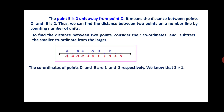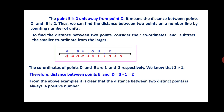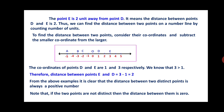Observe this figure. We will consider the coordinates of point D and E to be 1 and 3 respectively. We know that 3 is greater than 1. Therefore, the distance between point E and D will be equal to 3 minus 1, that is 2. From the above example, it is clear that the distance between two distinct points is always a positive number. Note: if the two points are not distinct, then the distance between them is always 0.